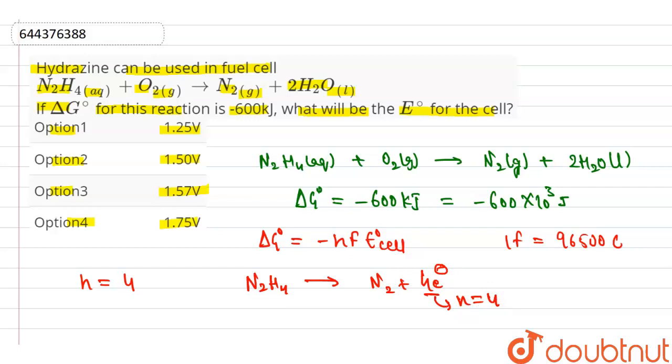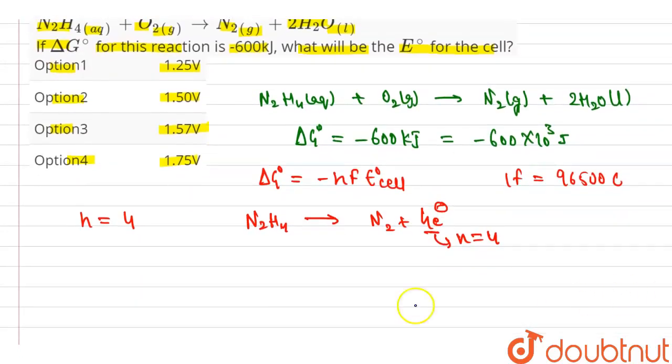Now put the value of n in delta G0. Then delta G0 equals minus 4 times 96500 times E0 cell.